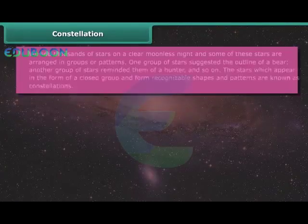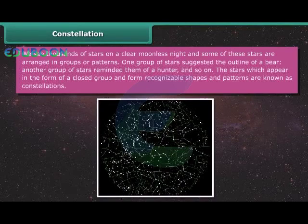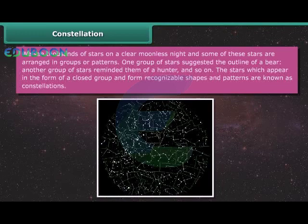Constellation. We see thousands of stars on a clear moonless night, and some of these stars are arranged in groups or patterns. One group of stars suggested the outline of a bear. Another group of stars reminded them of a hunter, and so on. The stars which appear in the form of a closed group and form recognizable shapes and patterns are known as constellations.